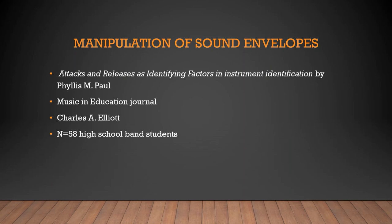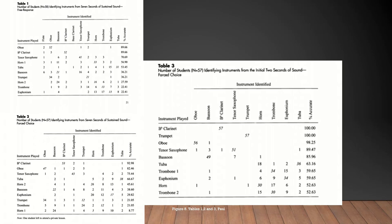The first condition presented stimuli without attack and releases of the sound envelope. And students identified instruments using free response. This is shown in Table 1. Condition 2 also presented stimuli without attacks and releases, but subjects were provided with a reference list of instruments. This is shown in Table 2. Condition 3 included only two seconds of the initial attacks and the reference list. And this is shown in Table 3. As in Eliot's study, clarinet and oboe were among the most correctly identified instruments. And presence of the initial sound increased students' overall abilities to recognize instruments. Another significant discovery is that students identified their own instrument timbre more consistently than did others, regardless of condition.